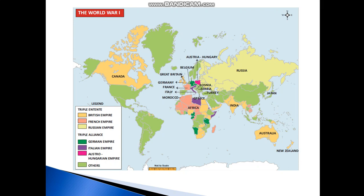Here on the European continent, the places shown include Austria, Hungary, Belgium, Great Britain, Germany, France, Italy, Morocco, Bosnia, and Serbia. Serbia is the most important part of World War I, especially along with Russia and Japan.